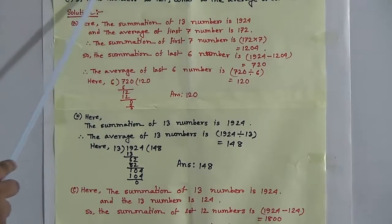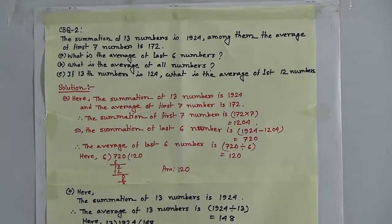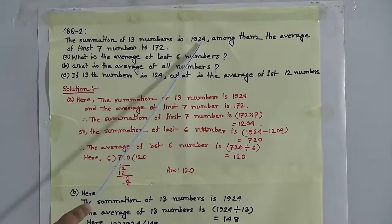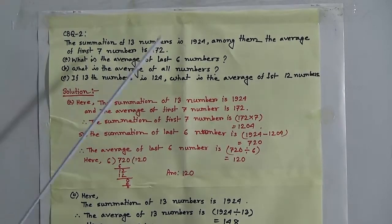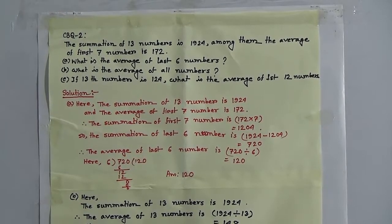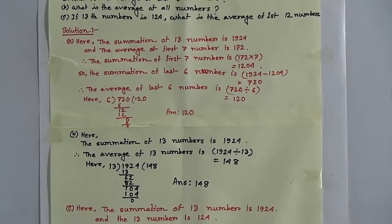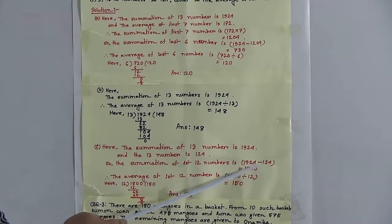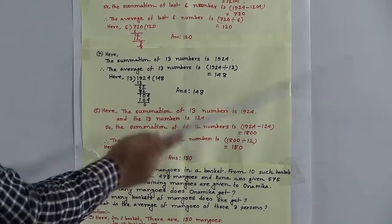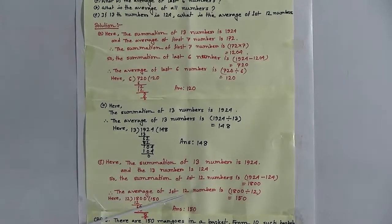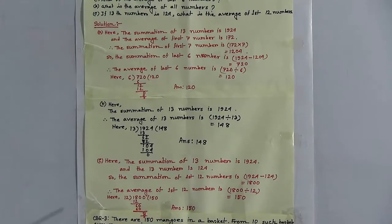Question C: if the 13th number is 124, what is the average of the first 12 numbers? The summation of 13 numbers is 1924. If we subtract the 13th number from this, we get the summation of 12 numbers. So the summation of the first 12 numbers is 1924 minus 124, which gives 1800. The number of quantities is 12, the summation is 1800, so we divide 1800 by 12 and we get 150.